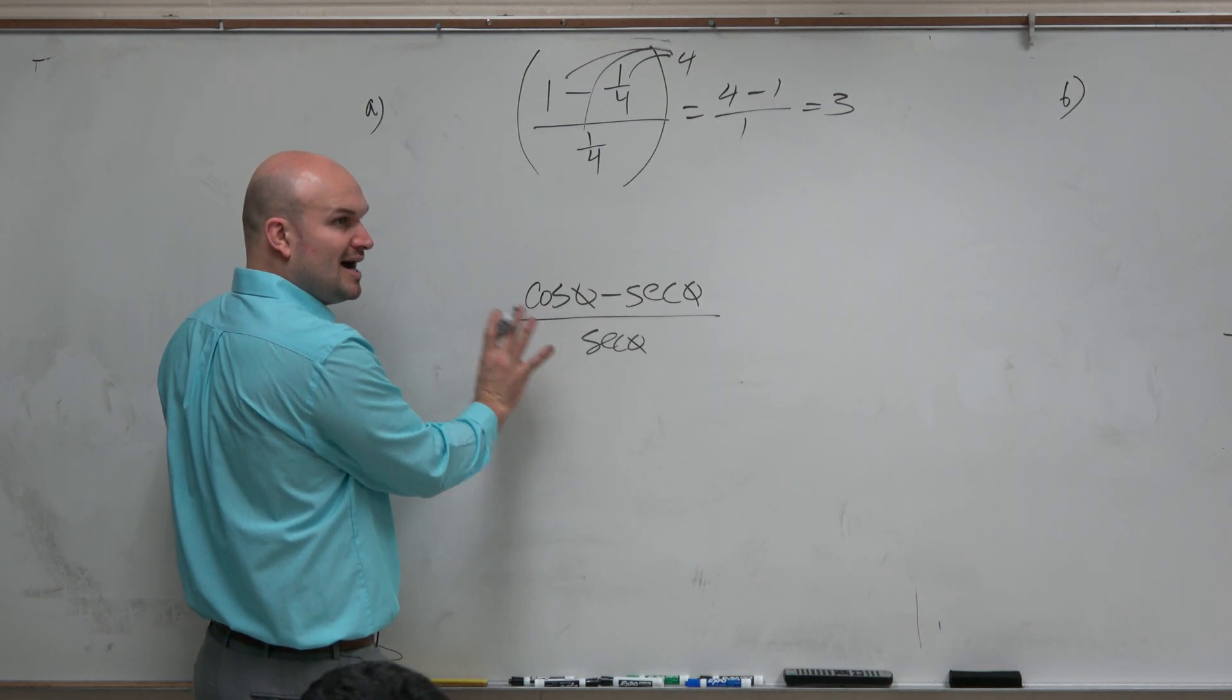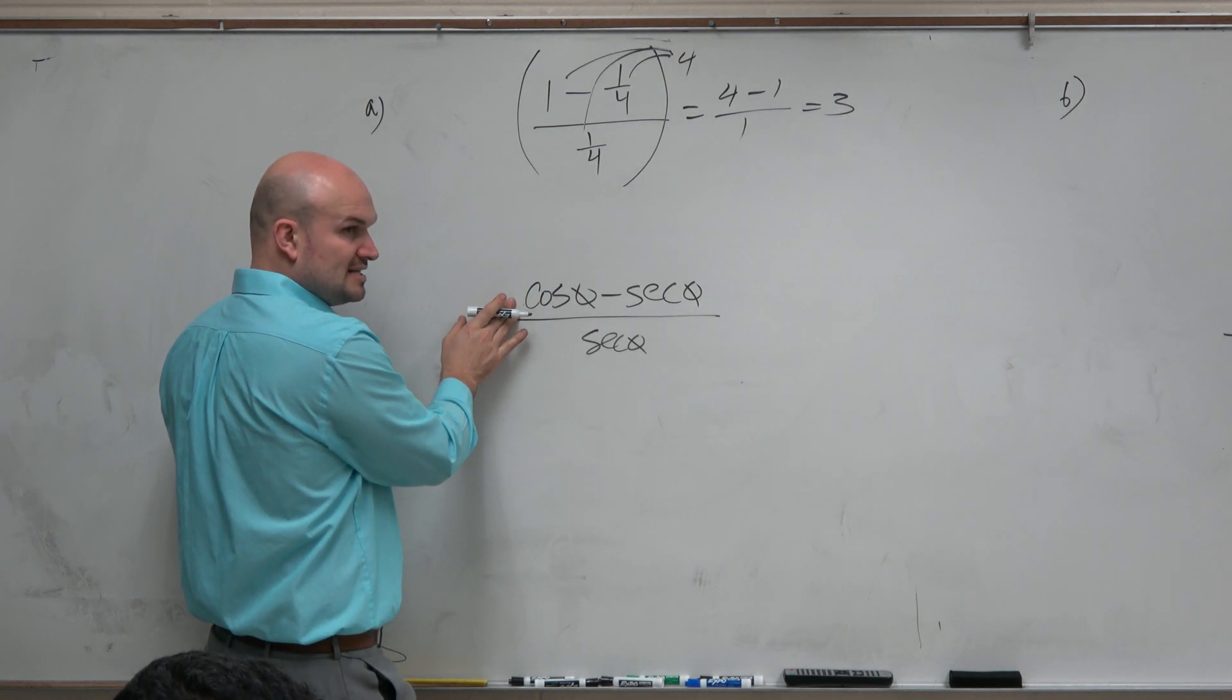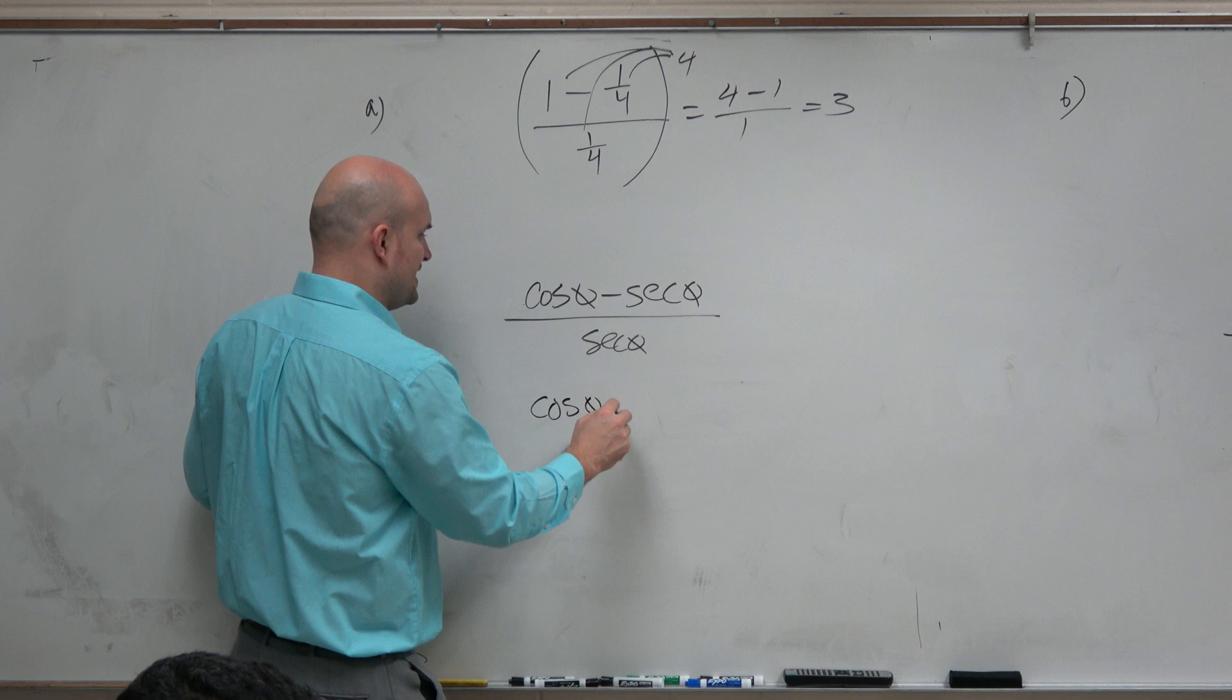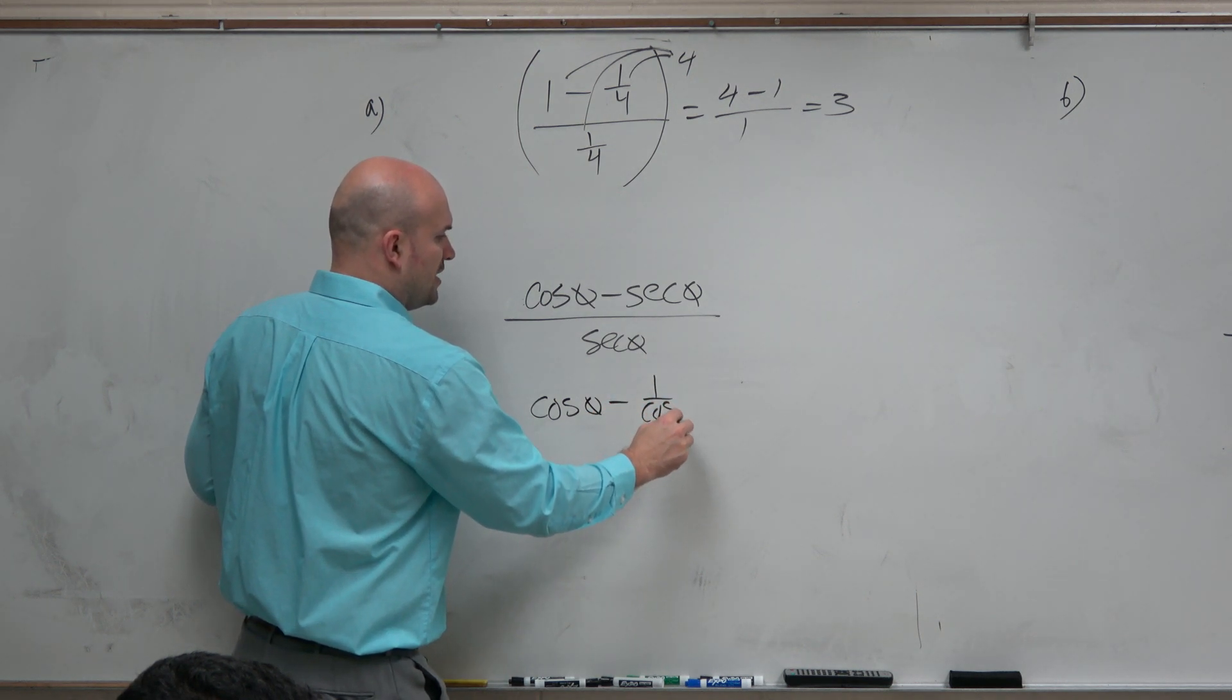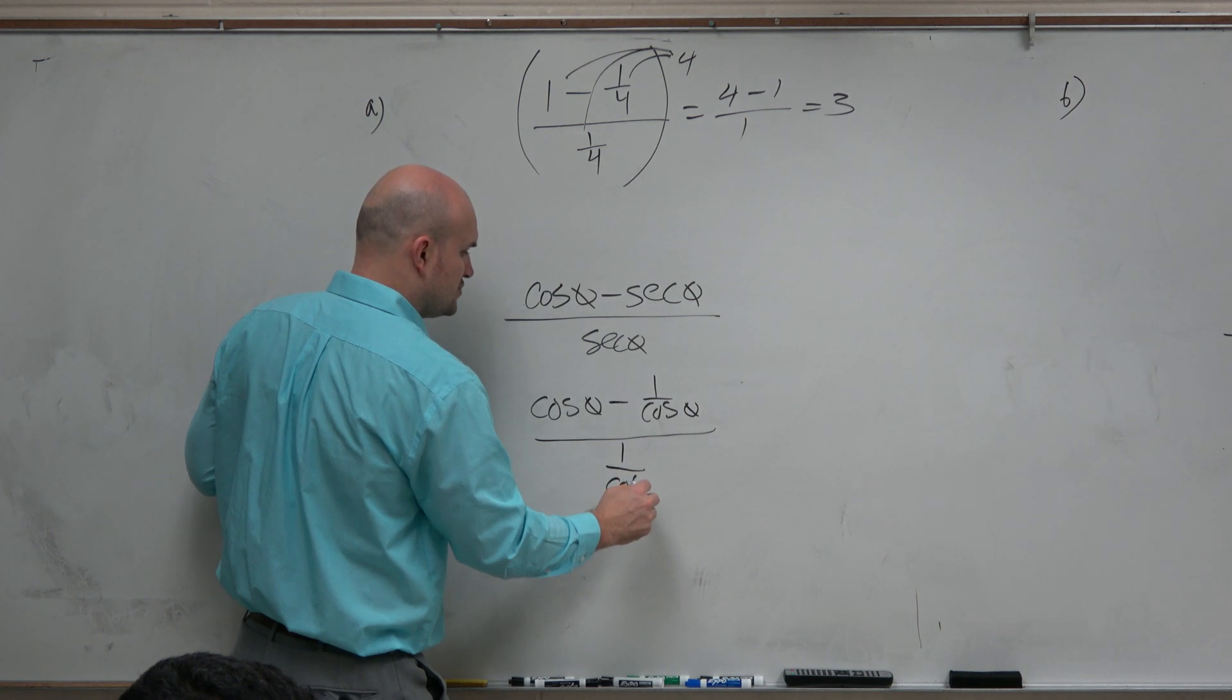So I could write cosine as 1 over secant, right? But if I want to try doing everything in sines and cosines, I'm going to leave cosine as it is. So I'll leave cosine of theta minus 1 over cosine of theta divided by 1 over cosine of theta.